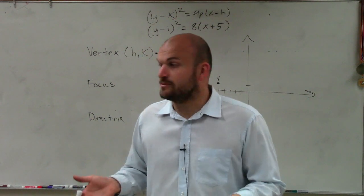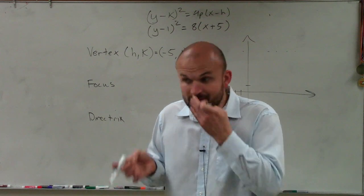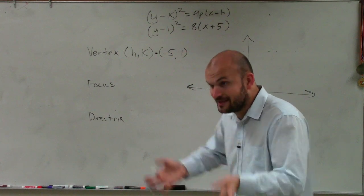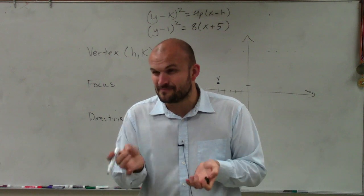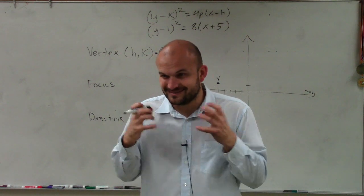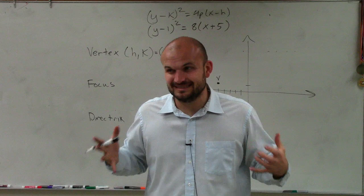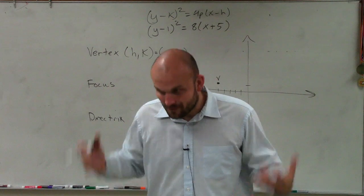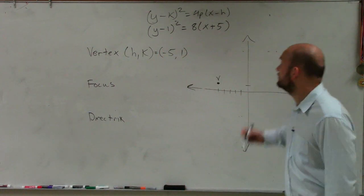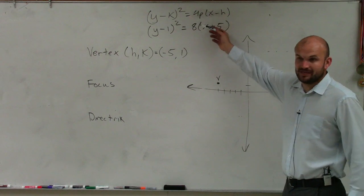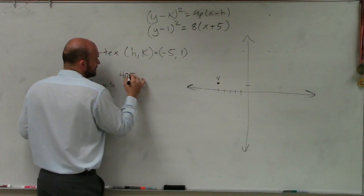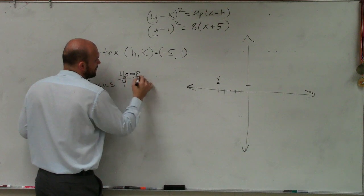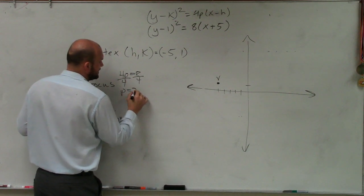Now the next thing I need to do is determine where's the focus. But remember, to determine the focus, we have the definition of p. The definition of p is distance from the vertex. So let's figure out p. We say 4p equals 8. Divide by 4, so p equals 2.